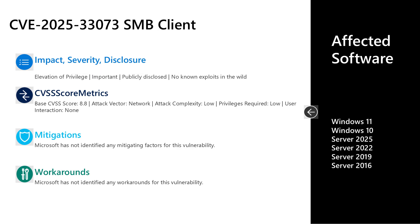Next, I'll talk to CVE-2025-33073. This is an important elevation of privilege vulnerability in the SMB client. This one was publicly disclosed, but there are no known exploits in the wild. It has a base CVSS score of 8.8 on a scale of 10. The attack vector is over the network, attack complexity is low, low privileges are required, but user interaction is not required to leverage this vulnerability. There are no documented mitigations or workarounds. Affected software is all versions of Windows in mainstream support, Server 2016 through Server 2025, as well as Windows 10 and 11 on the desktop side.